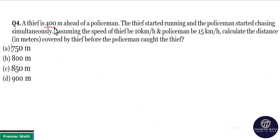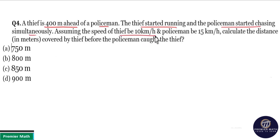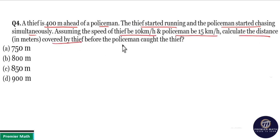A thief was 400 meters ahead of a policeman. The thief started running and the policeman started chasing simultaneously. Assuming the speed of the thief is 10 km per hour and the policeman is 15 km per hour, calculate the distance covered by the thief before the policeman caught him.